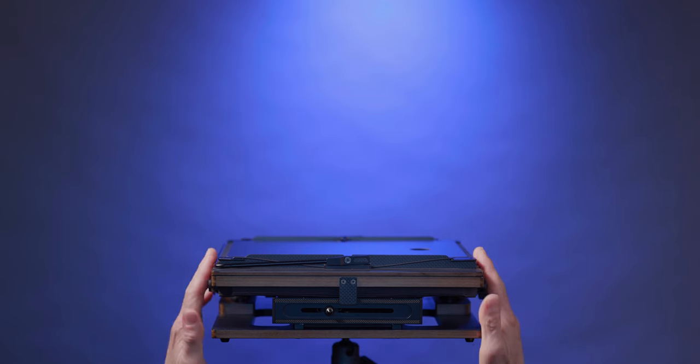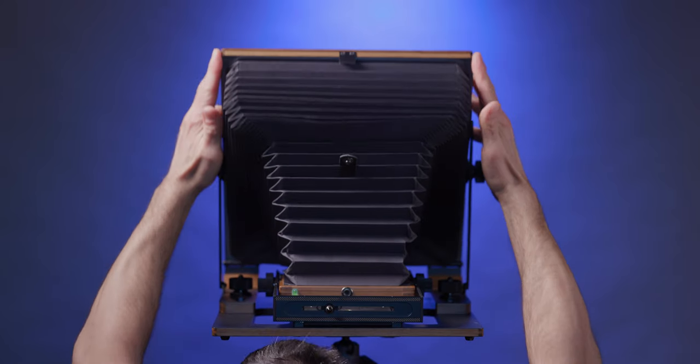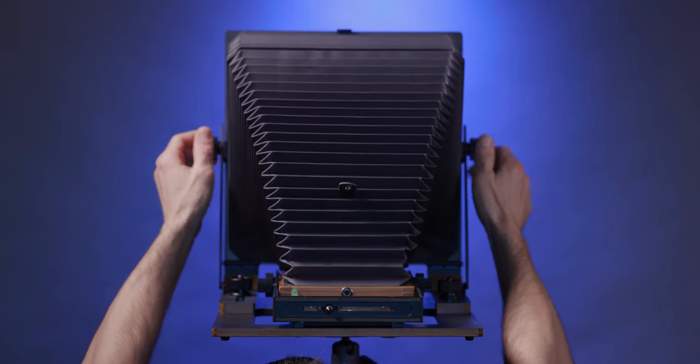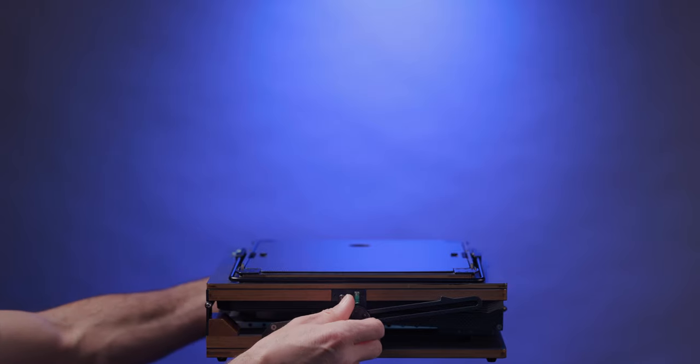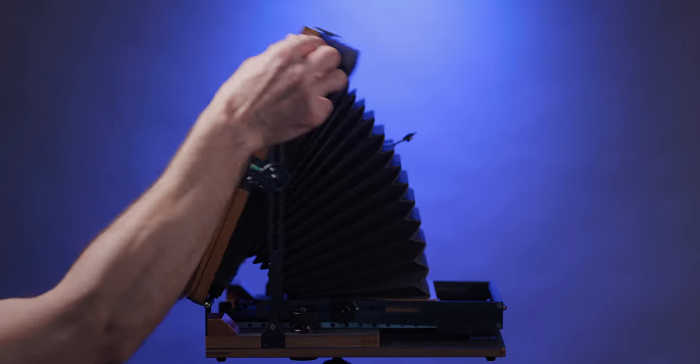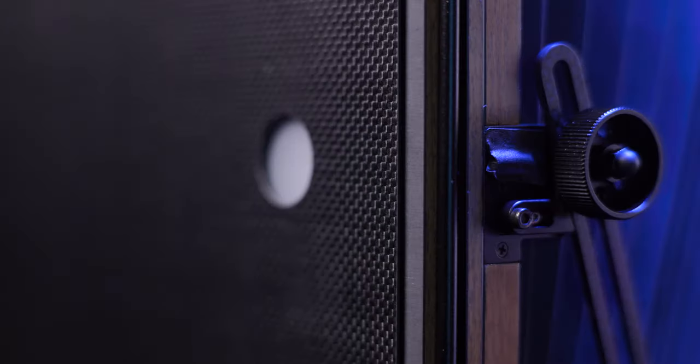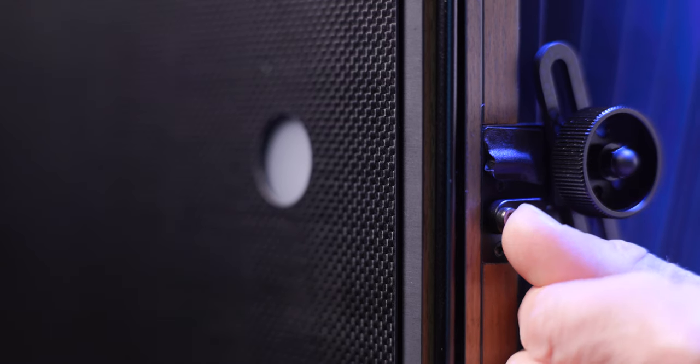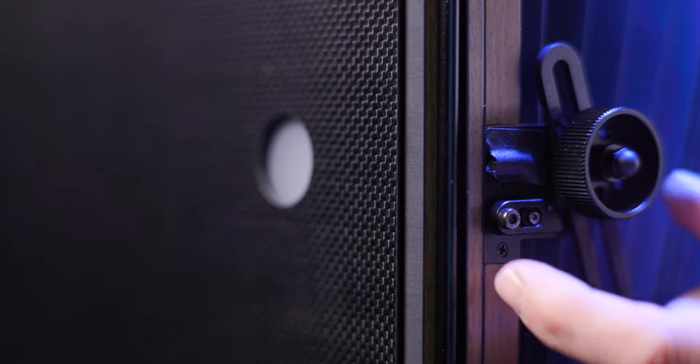To unfold the camera, begin by loosening the two rear standard knobs and raise the standard to its upright position. One of the aspects I love about the rear standard is that it automatically unfolds to a 90 degree position because of these clever little locks. It takes the guesswork out and eliminates having to fiddle with detents that are often employed by many other view cameras.